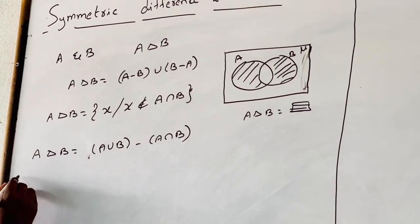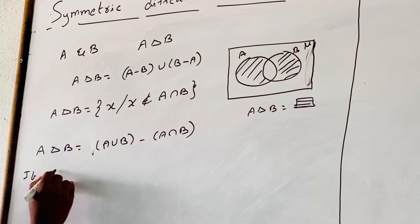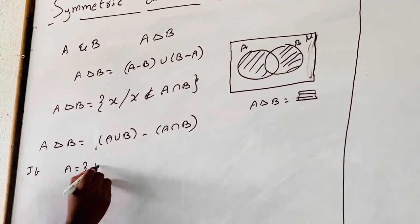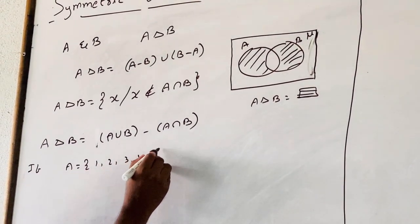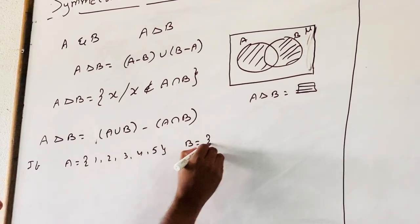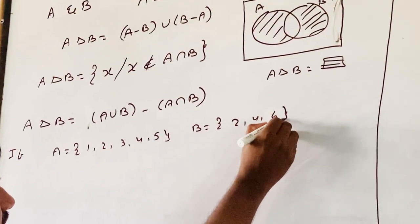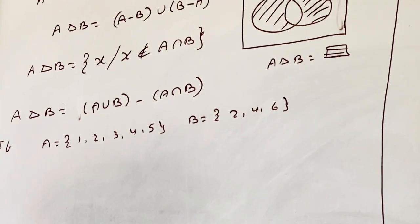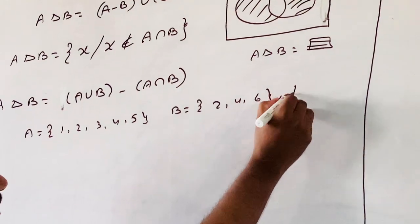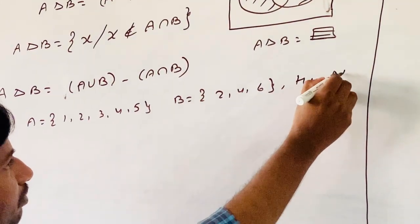For example, if A is equal to {1, 2, 3, 4, 5} and B is equal to {2, 4, 6}, then find A delta B.